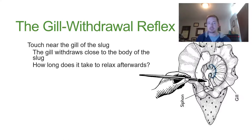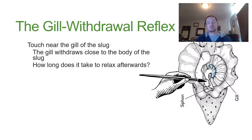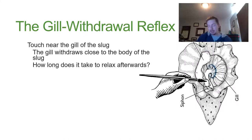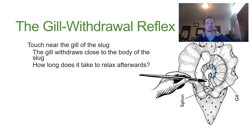The third outcome would be that you have the exact same response as you did the first time, and each of these three outcomes mean something. If that second poke has a shorter withdrawal, that means the animal has learned it is not in danger. But if it withdraws longer the second time, what that animal has learned is that this is something it should be worried about and protective of. The third outcome — if it doesn't change at all — tells us that it hasn't learned anything; its behavior has not changed.